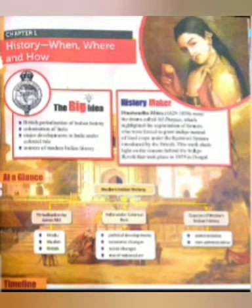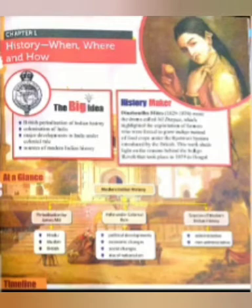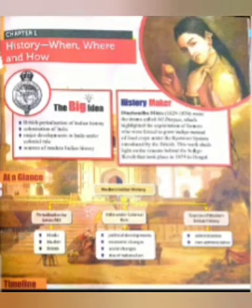This work sheds light on the reasons behind the Indigo Revolt that took place in 1859 in Bengal. Ab isse kya huwa ki jo kisaan thay, farmers thay, woh bharak gaye aur unhone British government ke khilaaf Bengal mein 1859 mein revolt start kar di, jis ko Indigo Revolt bola gaya.